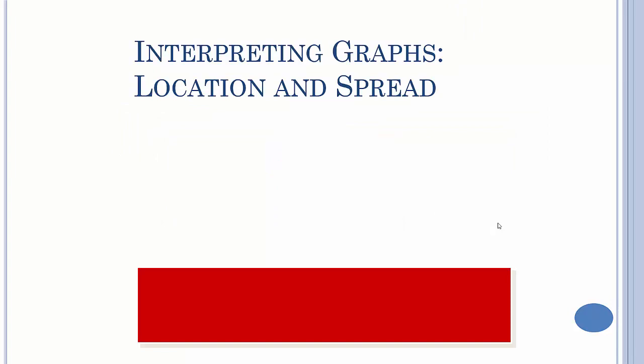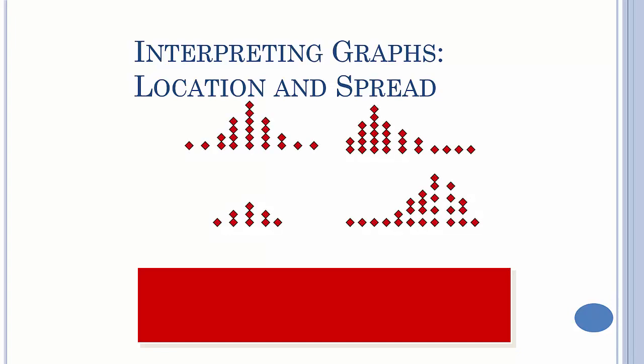Interpreting graphs. We've got two different types of graphs. Location and spread are basically measures of center and measures of spread.